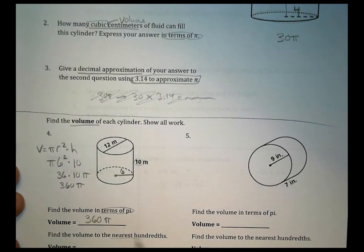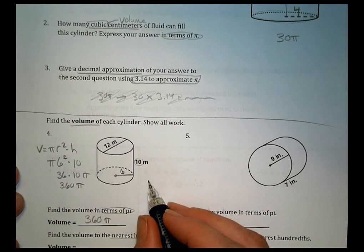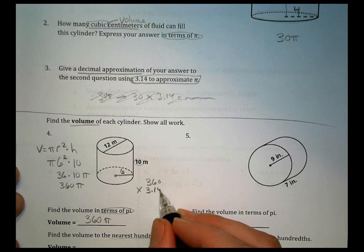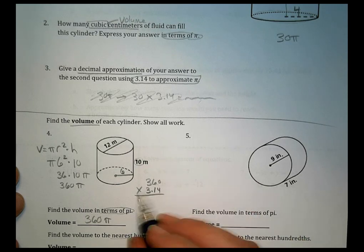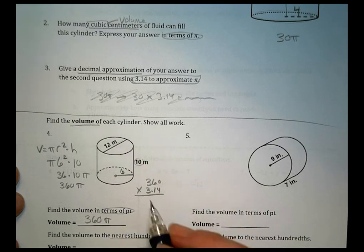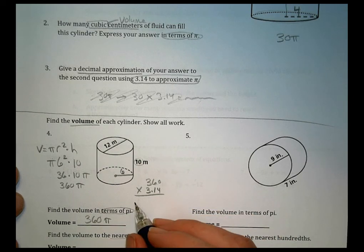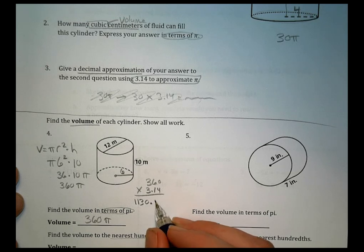And then when it says find the volume to the nearest hundredths, we're going to take 360, and we're going to multiply it by 3.14. And when you multiply that all the way out, whether you use a calculator or multiplication, just doing long multiplication practice, you end up with 1130.40.